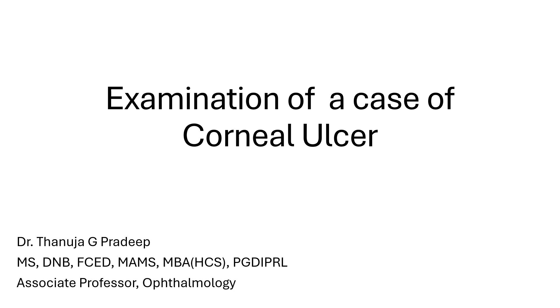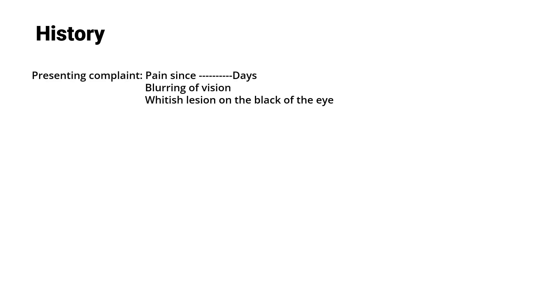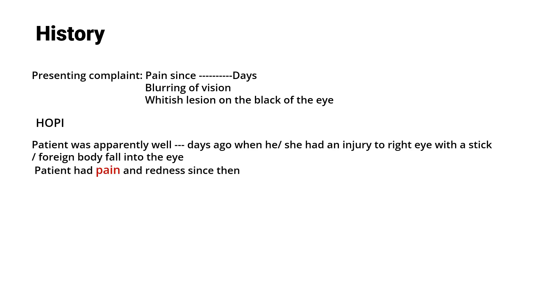For history, like any other case, you ask about all relevant details. Common complaints in a case of corneal ulcer would be pain — since how many days — then blurring of vision, and the patient may notice a whitish lesion on the black of the eye. So the most common complaints are pain and blurring of vision.